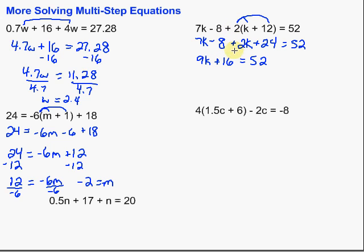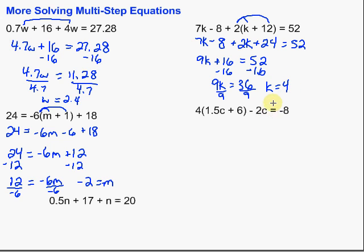Now we want that k by itself, so we get rid of the plus 16 by subtracting 16 from both sides. We subtract 16, bringing down what's left: 9k equals 52 minus 16, which gives us 36. Finally, to get k by itself, we divide by 9 on both sides, and we're left with k equals 4. Remember, we can check by putting 4 back in every time we see a k in our original equation, and it should work out.